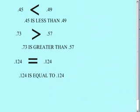If you look at these numbers, we seem to be pointing at the smallest number. You may have used the alligator eats the big number, or Pac-Man eats the big number — that's fine. But if you can see it, the point of the arrow is actually pointing at the smaller number. So forty-five hundredths is less than forty-nine hundredths. Now we're looking at seventy-three hundredths and fifty-seven hundredths, and again, we're pointing at the smaller number. Seventy-three hundredths is greater than fifty-seven hundredths.